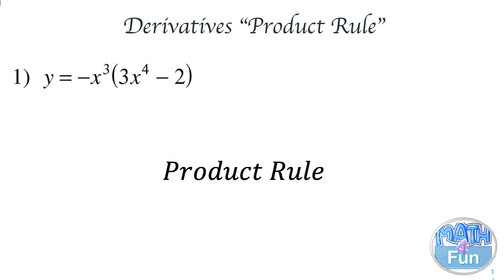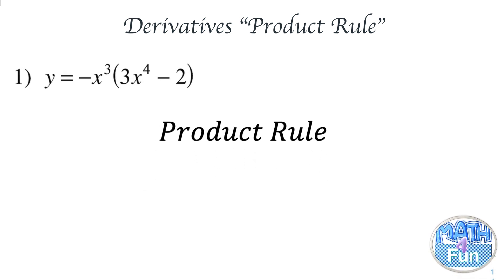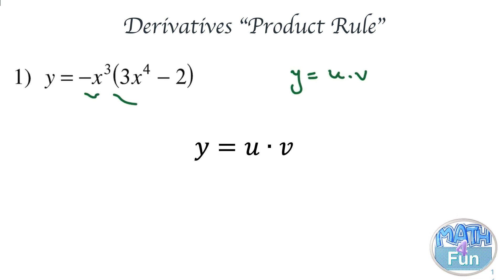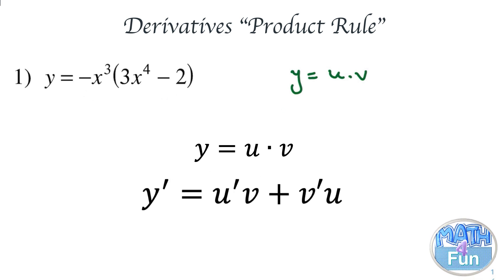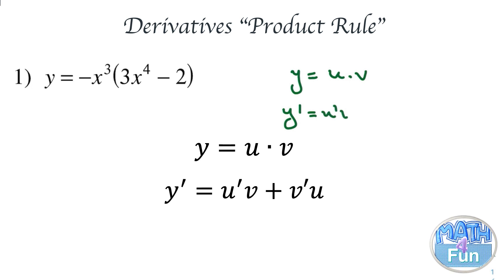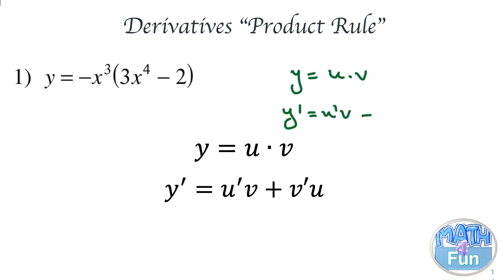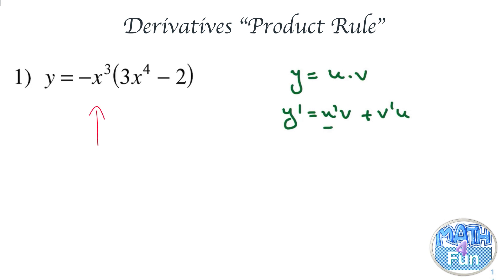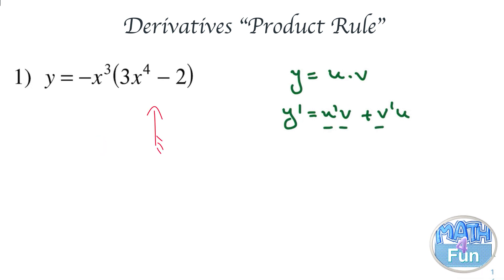The product rule means that when we have a function y equal to u times v, where each one of them is a function in x, we use y prime equals u prime times v plus v prime times u. That is: differentiate the first times the second normally, plus differentiate the second and multiply it by the first normally.